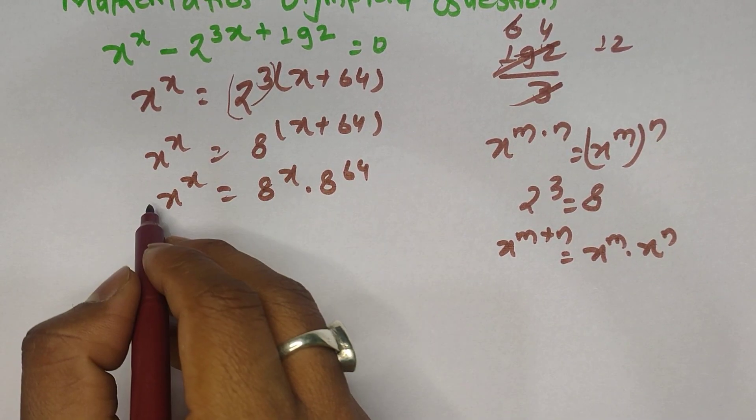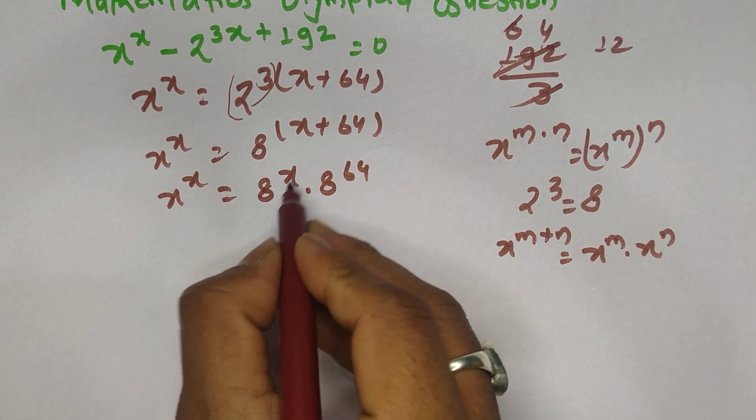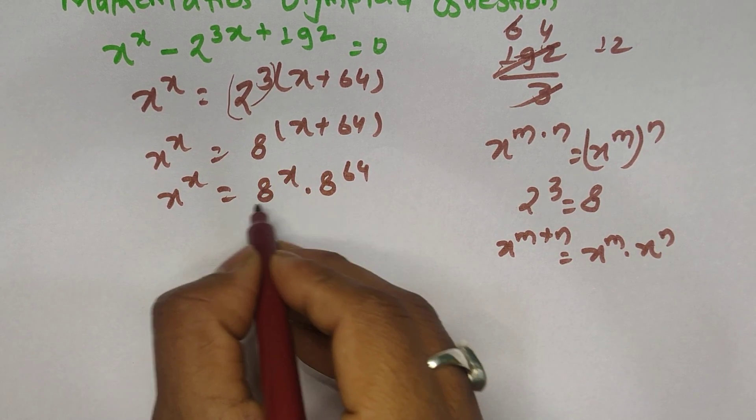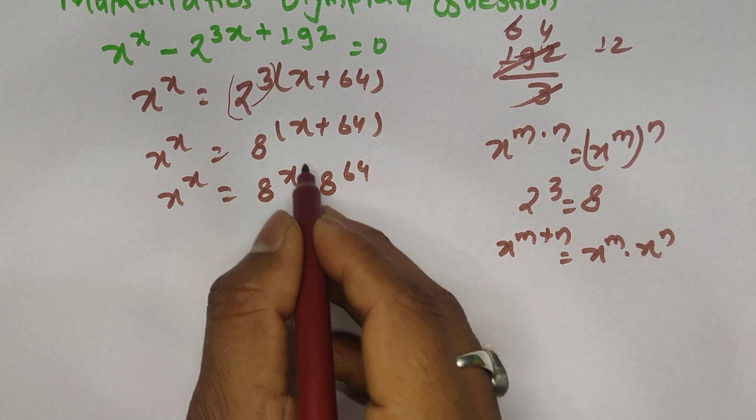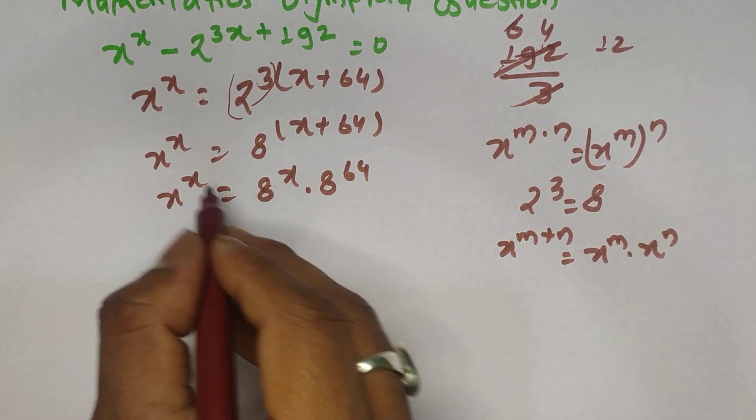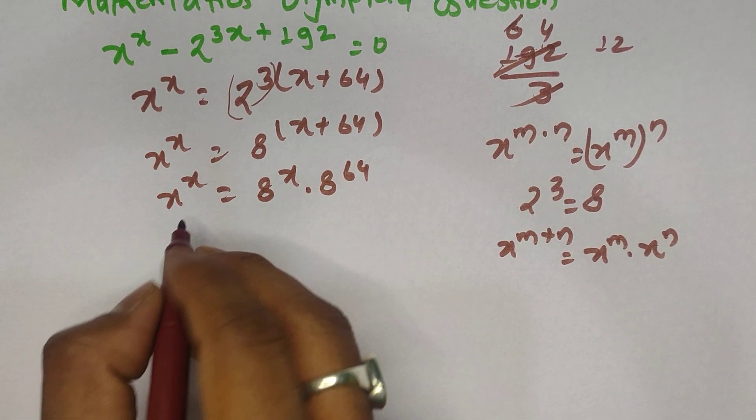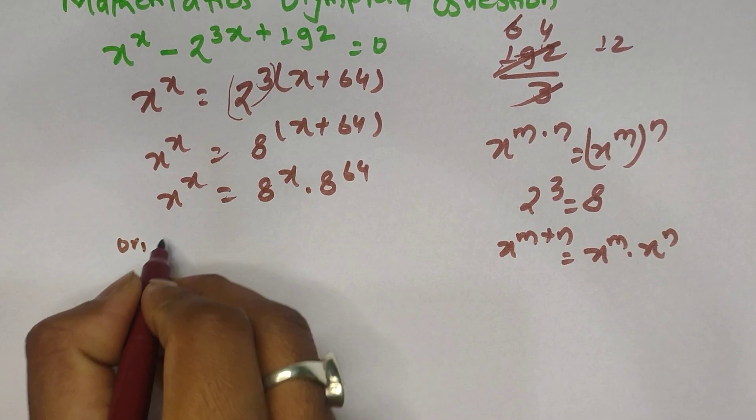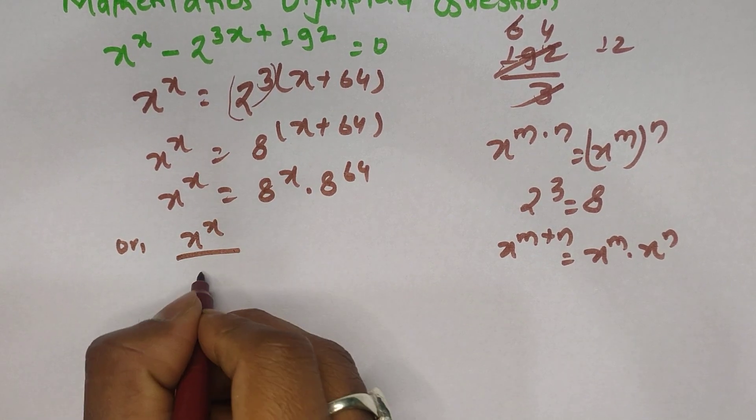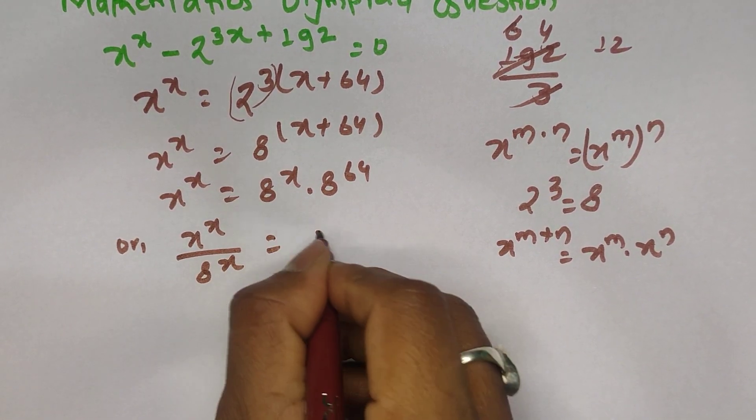Let us bring this term to the left side. This number is in multiplication, so when you move it to the left side, it will become division. So x power x divided by 8 power x equals 8 power 64.